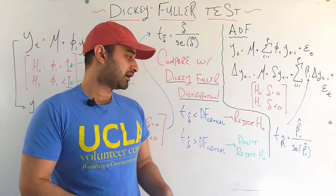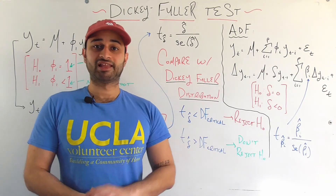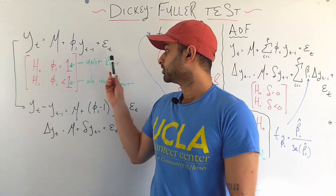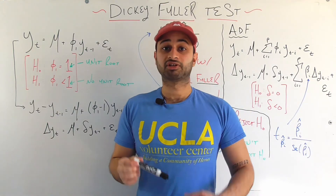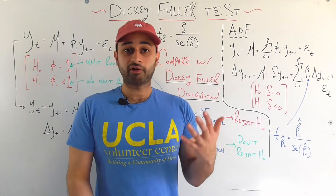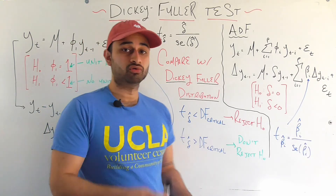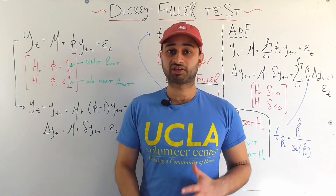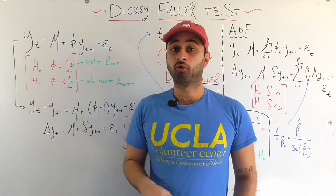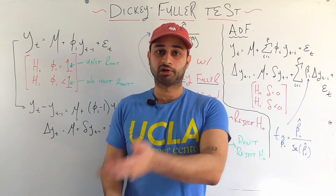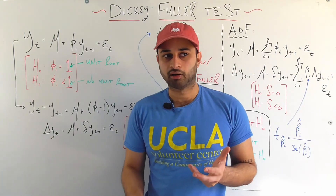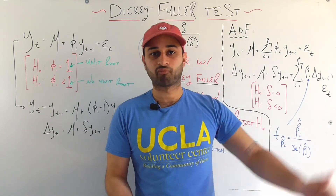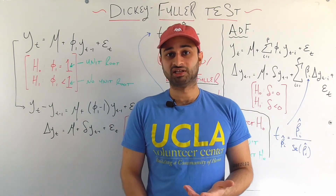We compare this t-stat against the Dickey-Fuller distribution and find whether it's less than or greater than the critical value. If it's less than the critical value we reject the null hypothesis — meaning we reject that it has a unit root, and say the time series is stationary. If t is greater than the critical value we do not reject H0 and do not have evidence that it is stationary. That's how we decide robustly for a simple AR(1) model. Of course, time series can be more complicated than AR(1), so how do we extend this? That's where the augmented Dickey-Fuller test comes in.